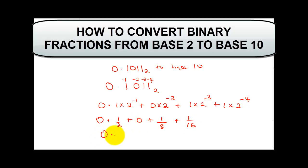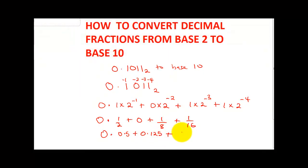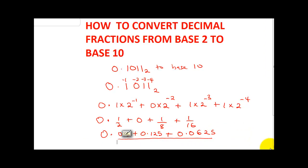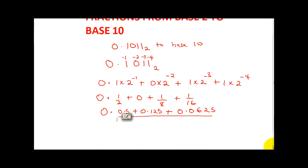So this is going to be: one-half is 0.5, plus one over eight is 0.125, plus one over sixteen is 0.0625. When you sum that part of the equation you are going to get the final answer: 0.6875 base 10. That's exactly how to convert decimal fractions from base 2 to base 10.